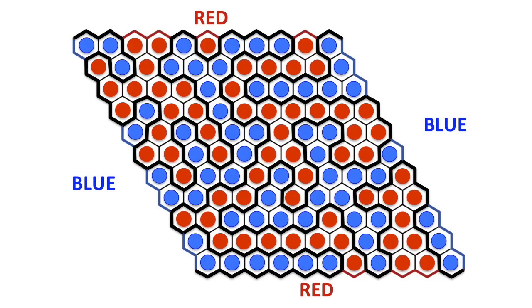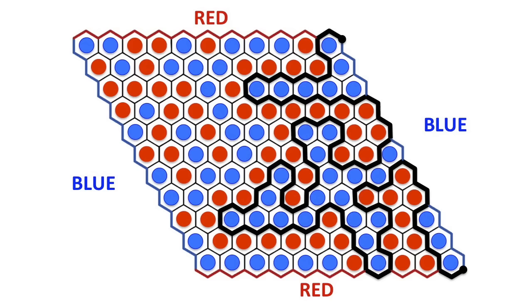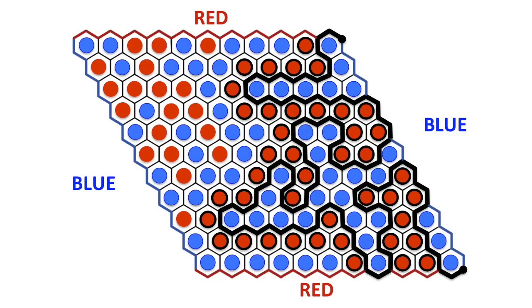A careful examination shows that there are exactly two chains of highlighted edges. This path connects these two corners, and this path connects the other two corners. Each path divides blue hexagons from red hexagons.